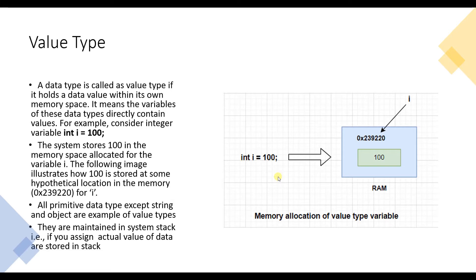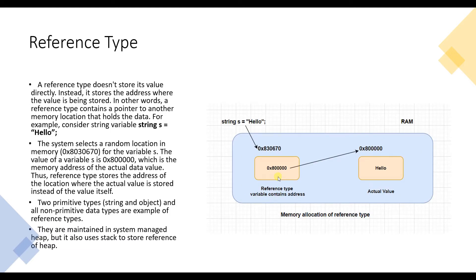Reference types don't store their value directly. Instead, they store the address where the actual value is stored. In simple words, a reference type contains a pointer or a reference to another memory location that holds the actual data. For example, a string variable s with value 'hello' — the system selects a random location in memory, and the value of variable s is the address of the location where the actual value resides. The two primitive types string and object, and all non-primitive data types, are examples of reference types. Reference types use the heap to store data and the stack to store the reference.